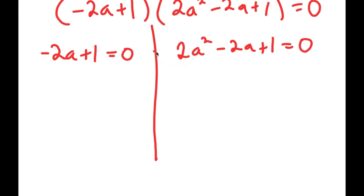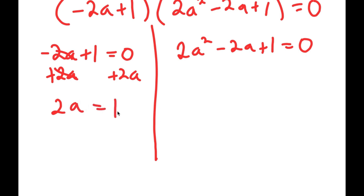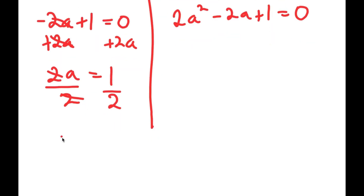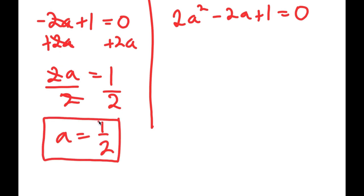For negative 2a plus 1 equals 0, all I have to do is add 2a on both sides, and I get 2a is equal to 1. Now if I divide both sides by 2, these two cancel out and I get a is equal to 1 half. So this is one solution for a.